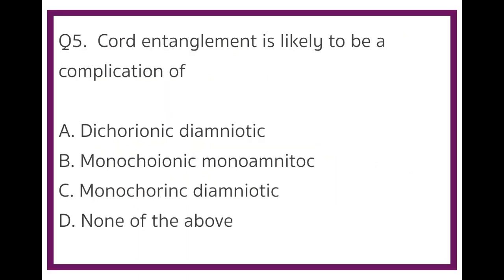Question 5. Cord entanglement is likely to be a complication of which of the following twins? Option A, dichorionic diamniotic. Option B, monochorionic monoamniotic. Option C, monochorionic diamniotic. Option D, none of the above. The answer to this question is monochorionic monoamniotic.